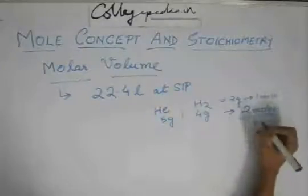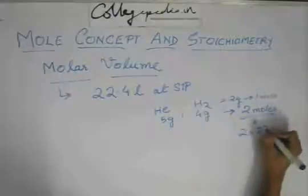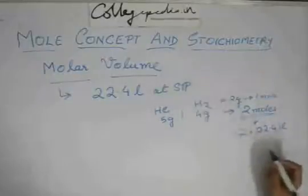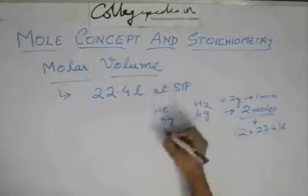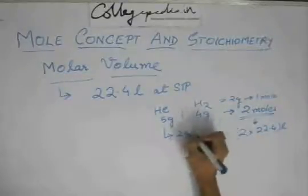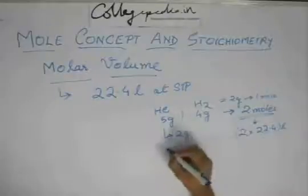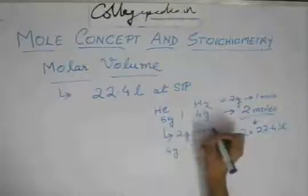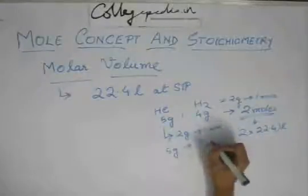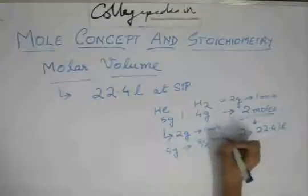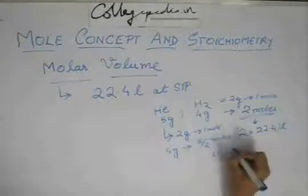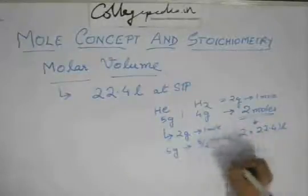Helium also has an atomic weight of 2 gram. So 5 gram - 2 gram will be 1 mole and 5 gram would be 5 by 2 moles. So the volume would be 5 by 2 into 22.4 liter.